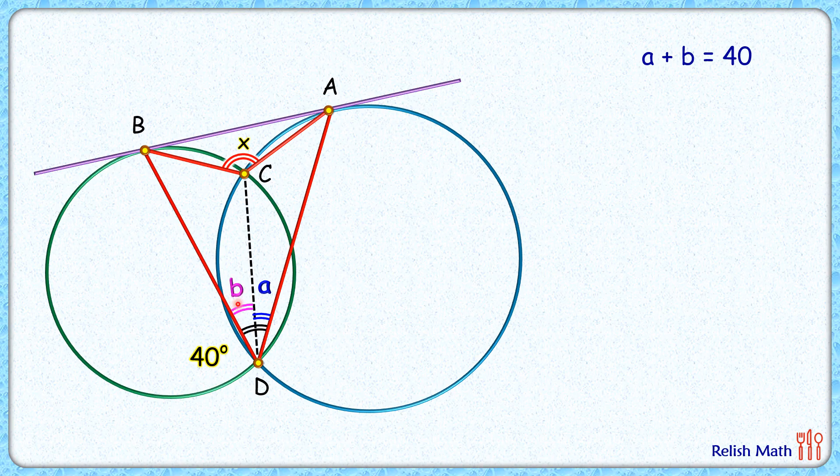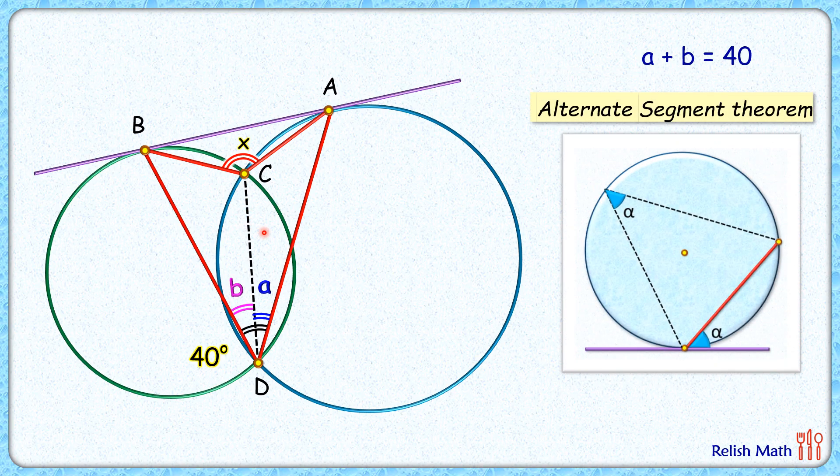Now to proceed further we'll be using the alternate segment theorem. As per the alternate segment theorem, the angle between the chord and the tangent is the same as the angle formed by that chord in the remaining part of the segment.